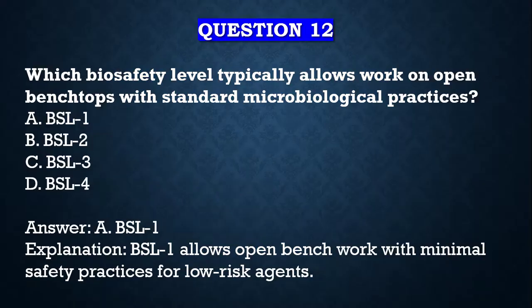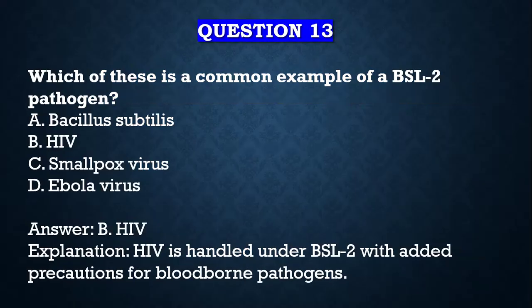Question number twelve: which biosafety level typically allows work on open bench tops with standard microbiological practices? A) BSL1, B) BSL2, C) BSL3, D) BSL4. Your answer is BSL1, because with BSL1 you can work on open benches with minimal safety practices — these are low-risk agents that usually will not cause disease, like E. coli K12.